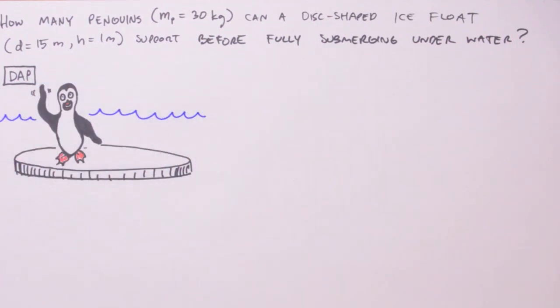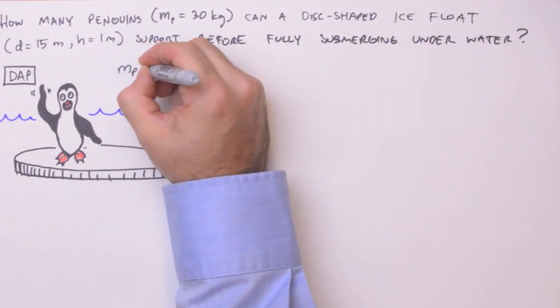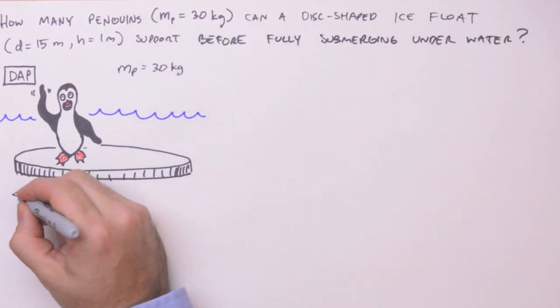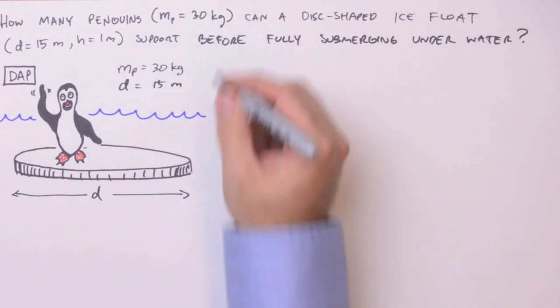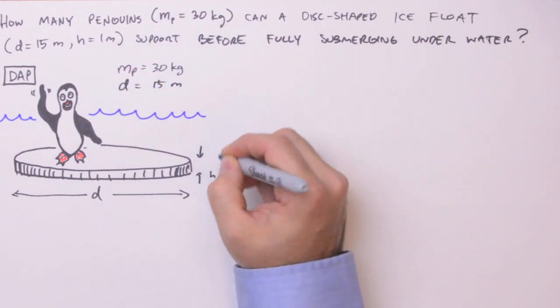Now once we've drawn our picture, we need to identify and indicate our knowns and unknowns. I know that each penguin has a mass of 30 kilograms. I also know that the diameter of this float is 15 meters, and that the thickness of the float is 1 meter.